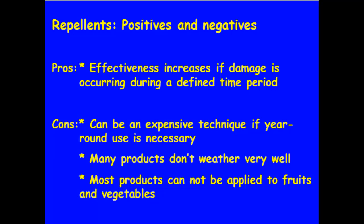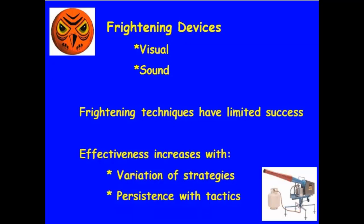Many products don't weather very well. As an example, Hinder only lasts two to four weeks, so you're going to have to reapply that product — and so it can be expensive. Another limitation for vegetable production is that most of these repellents can only be applied to ornamentals or trees during the dormant period. Fruit trees, for example, require many taste repellents to be applied prior to flowering. So we are limited with the repellents we can utilize for vegetable production.